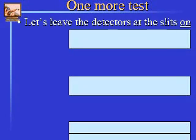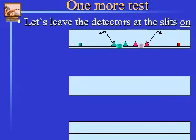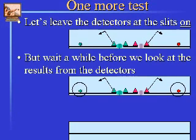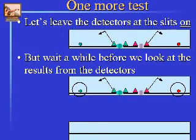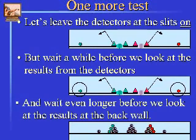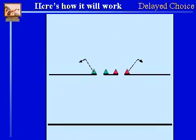Interesting theory, Mr. Rooks. Let's leave the detector on and wait a while. We're going to put it into an internal loop and not look at it right away. And eventually we will count them up. But not right away — wait even longer, and then after we've decided should we look at it or should we not look at it, then we'll look at the back wall and see what pattern we get.